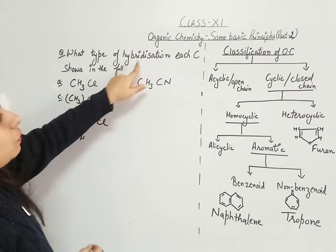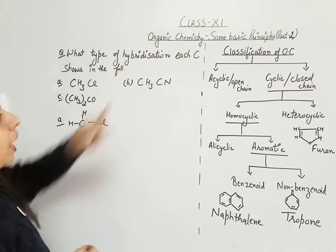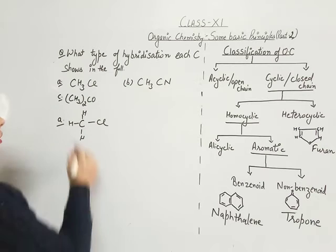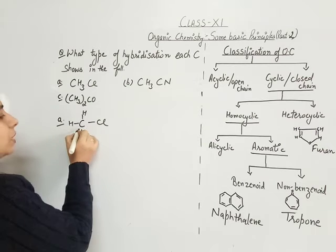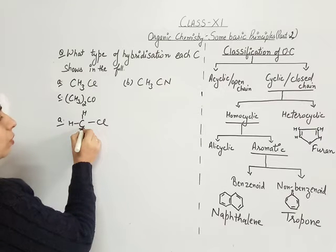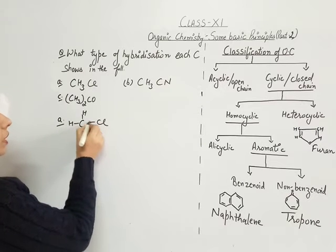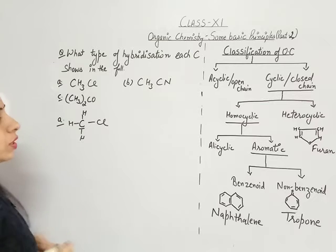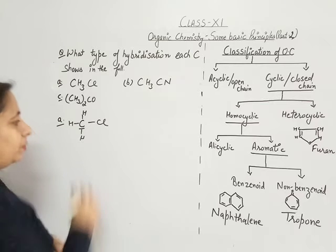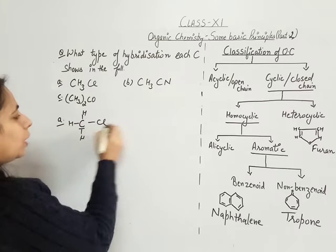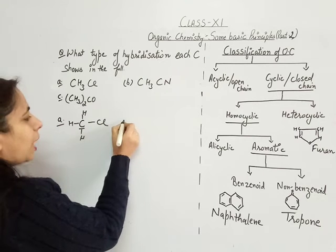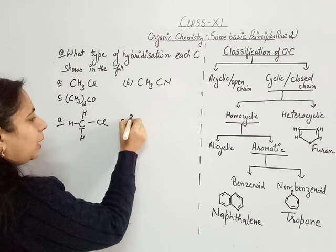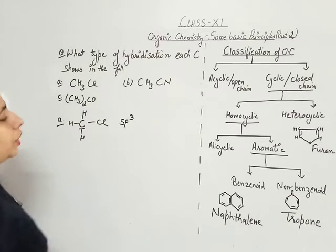The question is we have to find the hybridization of carbon. Carbon is this one, and what is observed here is that carbon is forming 4 single bonds. Four single bonds means carbon is showing SP3 hybridization here.